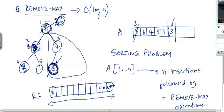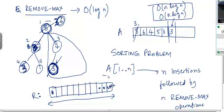Now we know that the complexity of an insertion operation is log n. So n insertions are going to take at most order n log n. Likewise, the complexity of a remove max operation is order log n. So if we execute n remove max operations one after another, the complexity is going to be at most order n log n. So we can use heaps to sort this array A in order n log n time overall. That in essence is the heap sort algorithm.